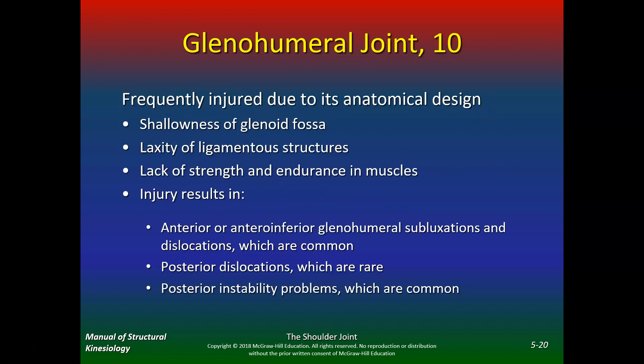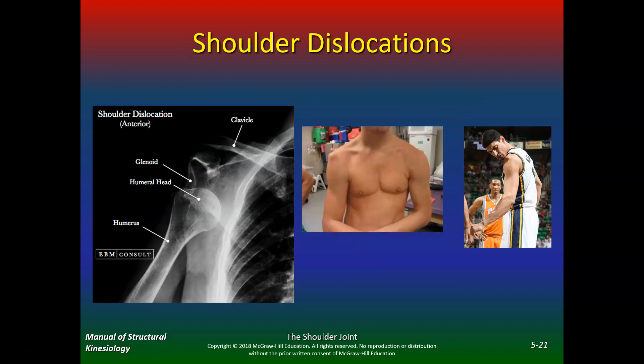The glenohumeral joint is frequently injured due to its anatomical design — the shallowness of the glenoid fossa, laxity of ligaments and structures, and lack of rotator cuff strength and endurance. Injury results in anterior and anterior-inferior glenohumeral subluxations or dislocations, which are very common. Posterior dislocations are rare, but possible in MMA or UFC. Examples include Enes Kanter and Kevin Love, who have both dislocated their shoulders.